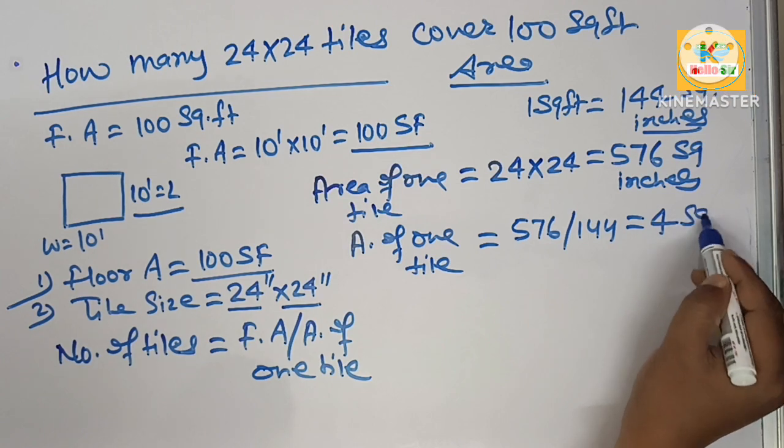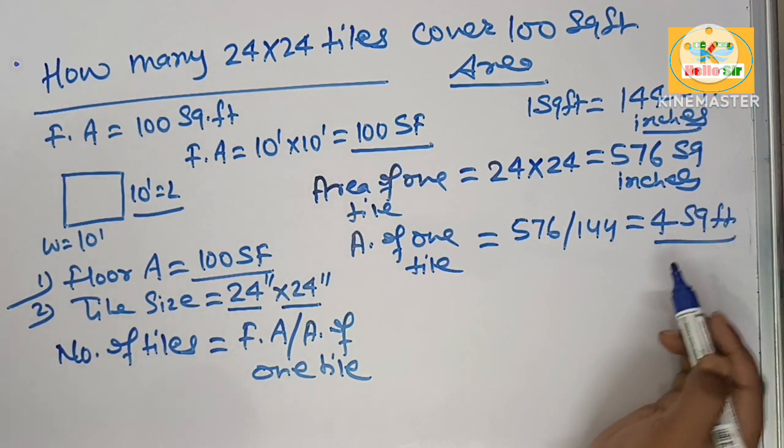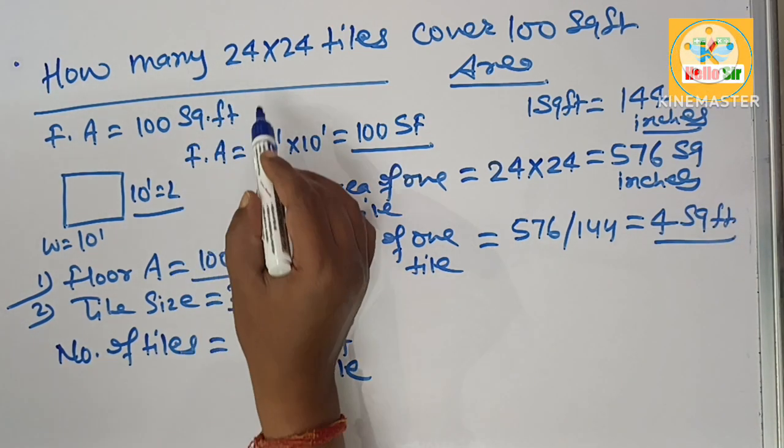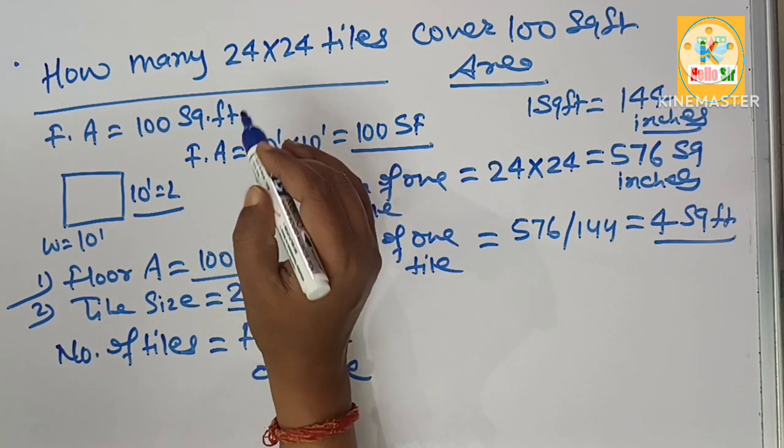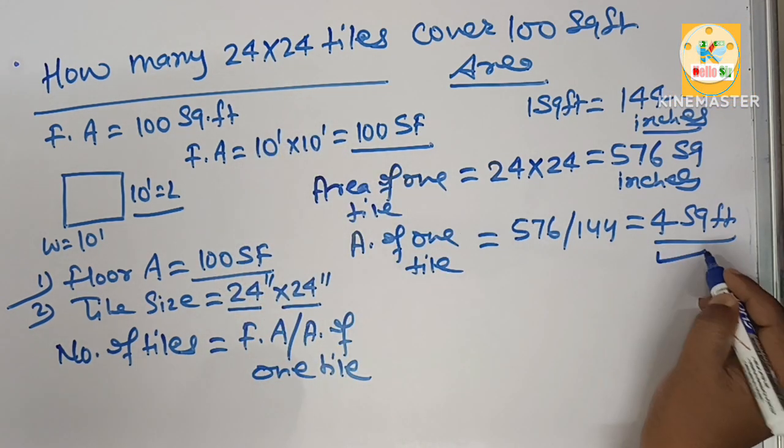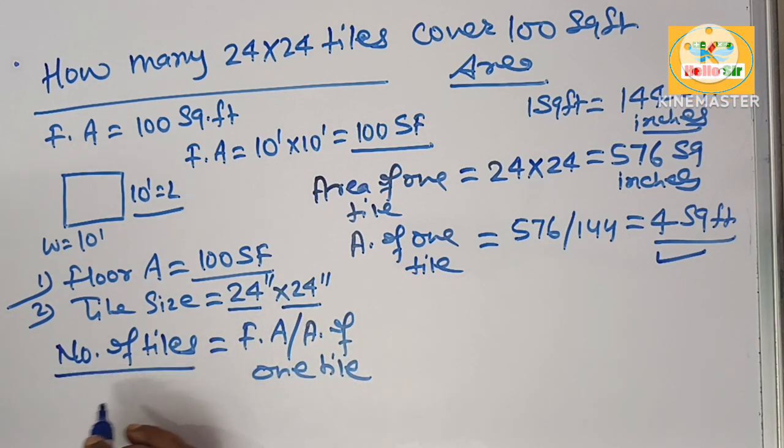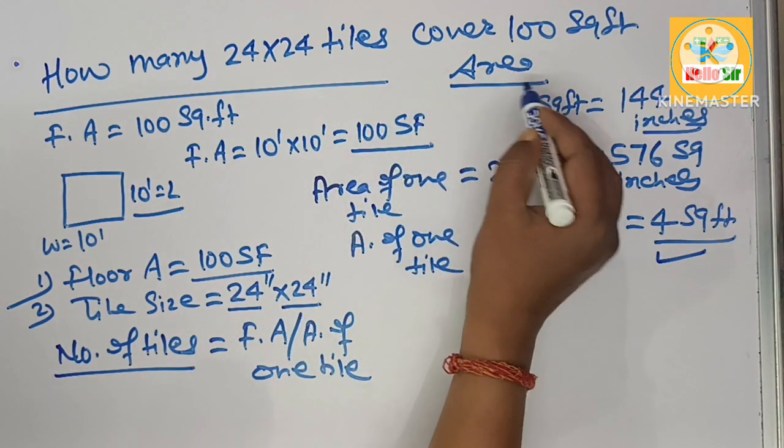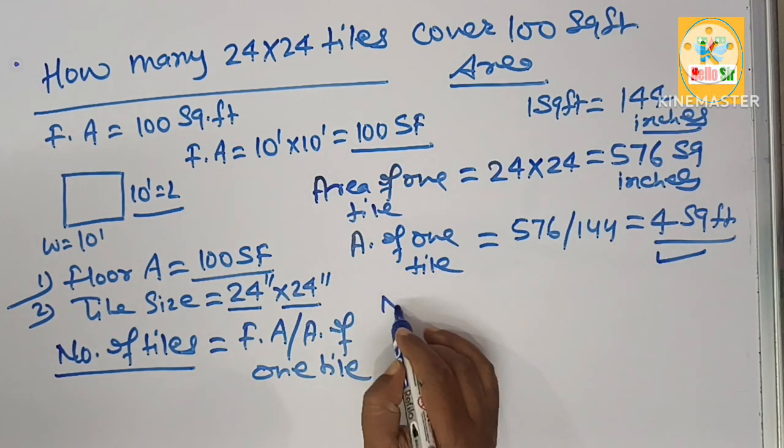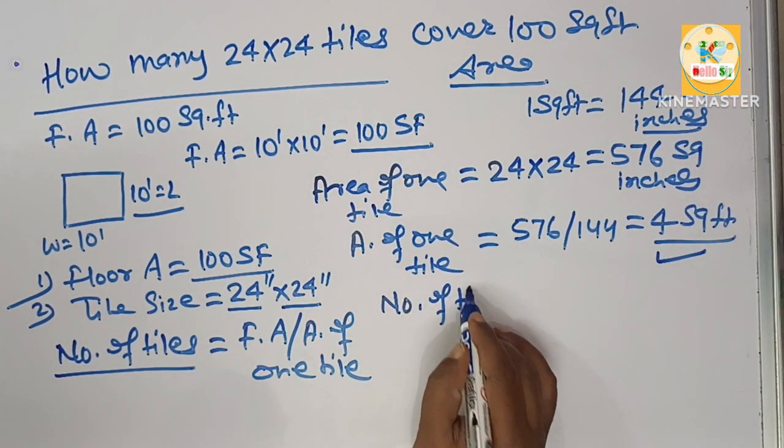Area of one tile in square feet, you can divide 576 by 144. This will come about 4 square feet. It means each 24 inch by 24 inch tile contains 4 square foot area. Now you have to find out number of tiles that cover 100 square foot area.